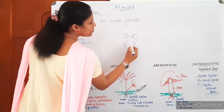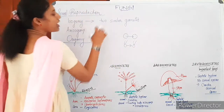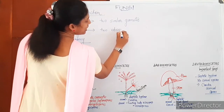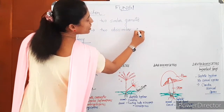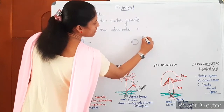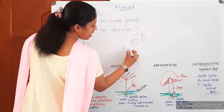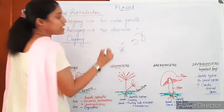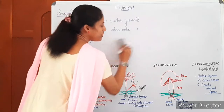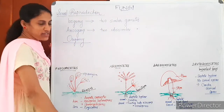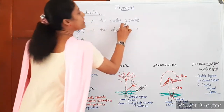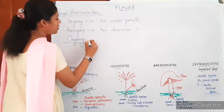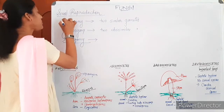In anisogamy, two dissimilar gametes fuse — one may be non-motile and the other motile, or one may be small in size and the other big. In sexual reproduction, if the gametes are dissimilar and fuse, that is called anisogamy. So, if two similar gametes fuse it is isogamy; if two dissimilar gametes fuse it is anisogamy.